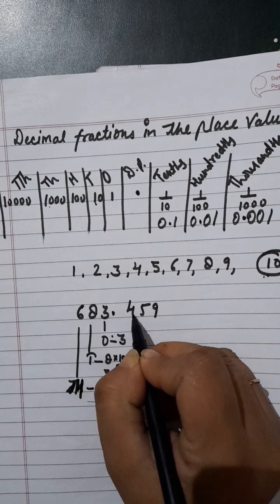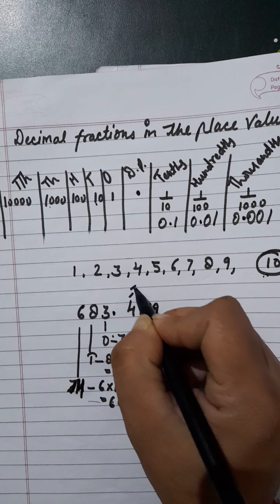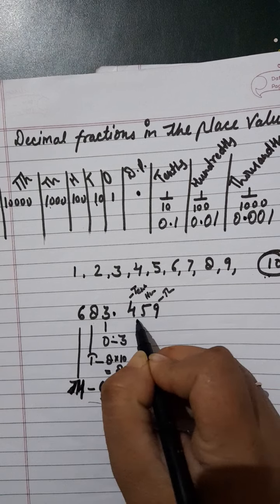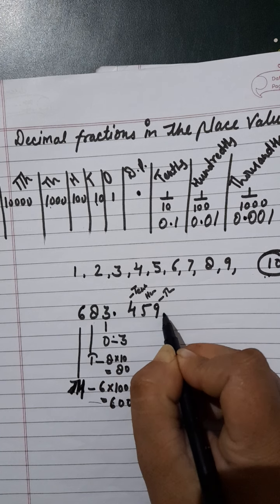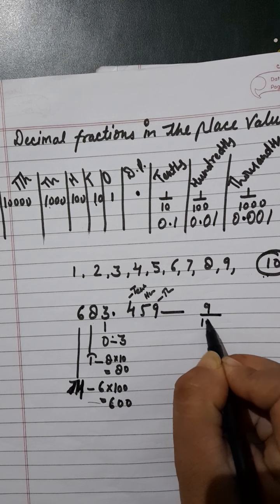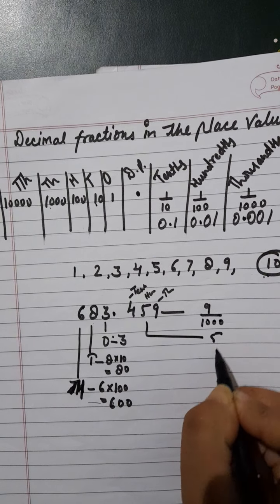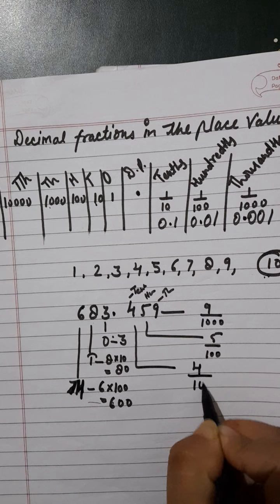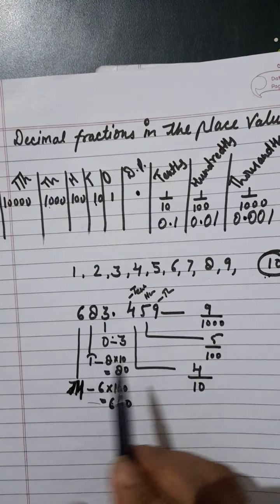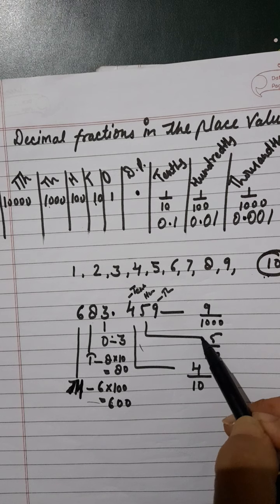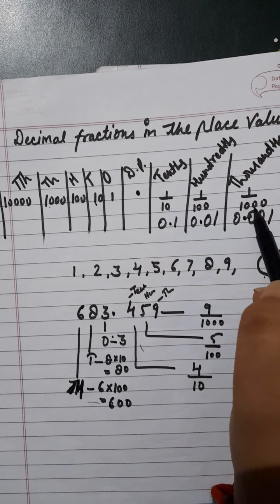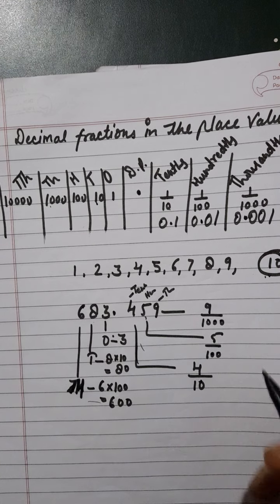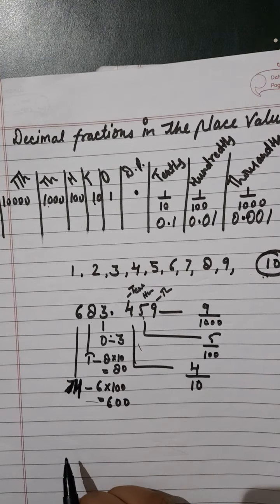Now the place value of four is four-tenth. After the decimal, this is tenths, hundredths, and thousandths. So nine divided by thousandths is 9/1000, five divided by hundredths is 5/100, and four divided by tenths is 4/10. This four is in the tenth place, five is in the hundredth place, and nine is in the thousandth place.